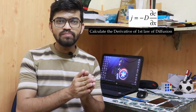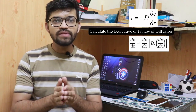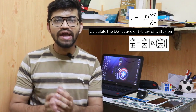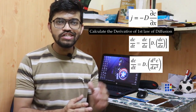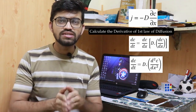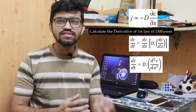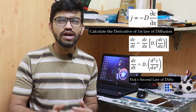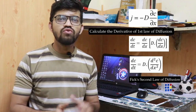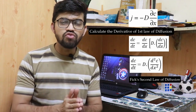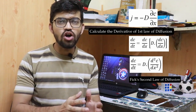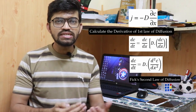If we calculate the derivative of the First Law of diffusion, we get the Second Law. The result is: dc/dt = d/dx · (D · dc/dx), which after solving gives dc/dt = D · (d²c/dx²). This is the formula for Fick's Second Law of diffusion, derived from the First Law, and it is suitable for unsteady state conditions — the real conditions.